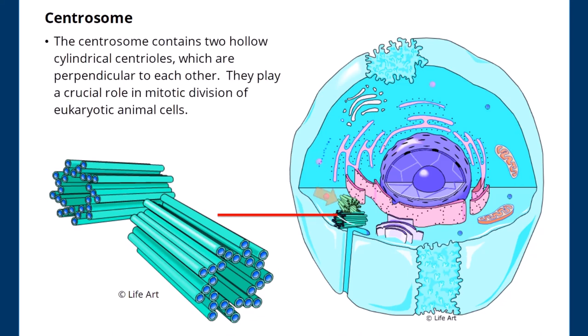Centrosome. The centrosome contains two hollow cylindrical centrioles, which are perpendicular to each other. They play a crucial role in mitotic division of eukaryotic animal cells.